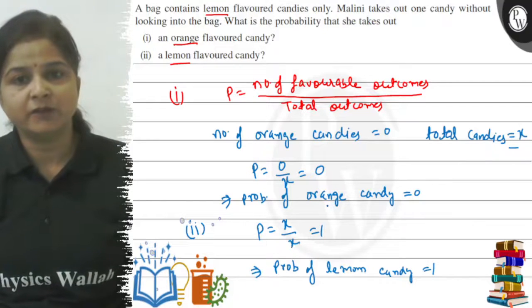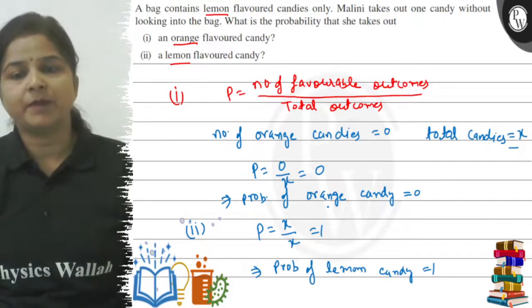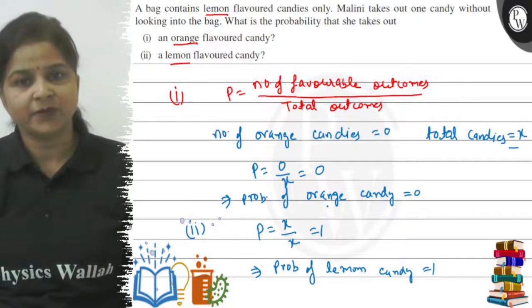So what is your answer? 0 for the first part and second part is 1. Hope you understand it well. Thank you.